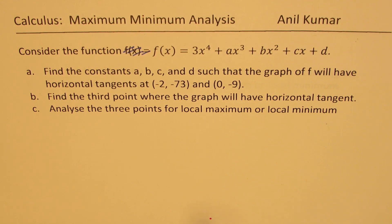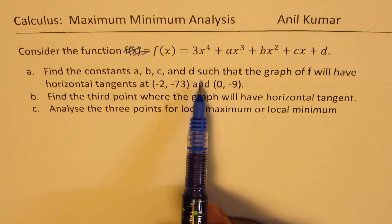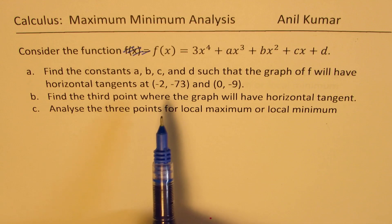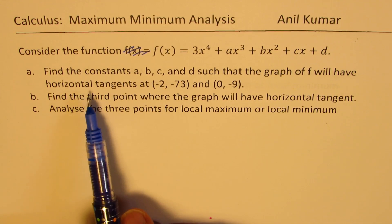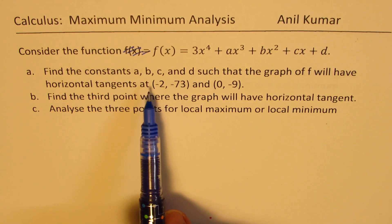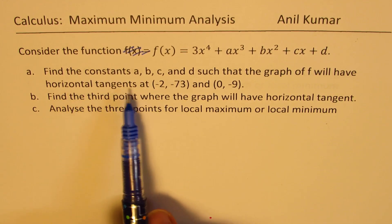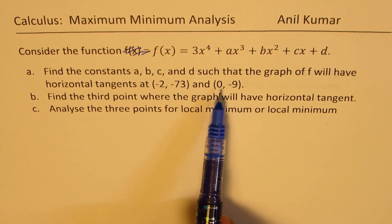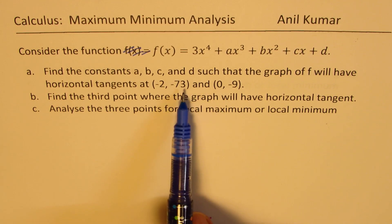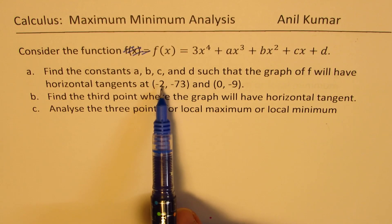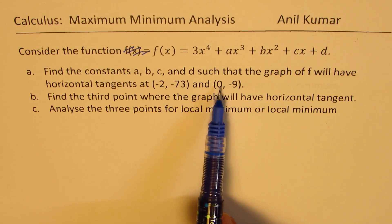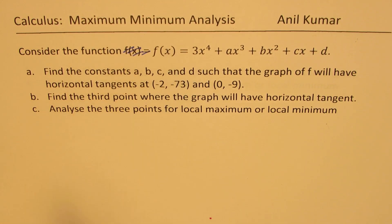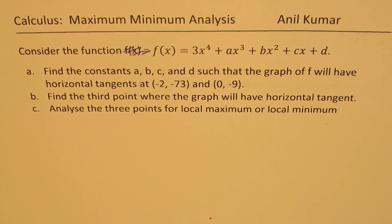There are four unknowns so we need four equations. We have two conditions given: horizontal tangents at two points will give us two conditions, and the points themselves will give us two other conditions. So these should help us find the solution.